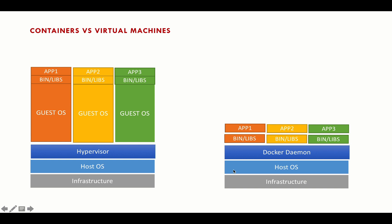When talking about the advantages of Docker compared to virtual machines, the best thing is that Docker containers are considered really lightweight. They are lightweight because the whole extra layer of operating system is missing. You're not installing a new OS for each container — you're sharing the host operating system, which makes Docker containers a lightweight component.